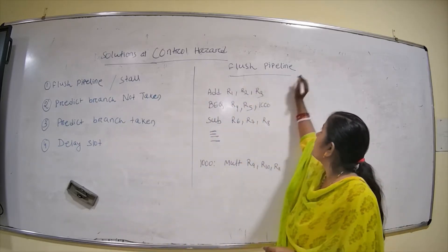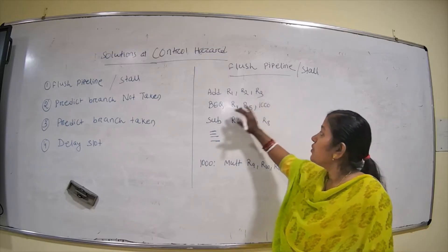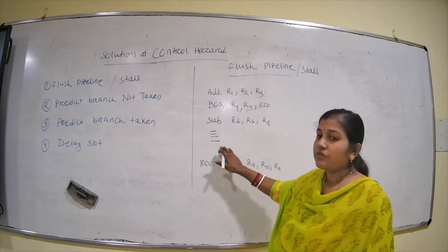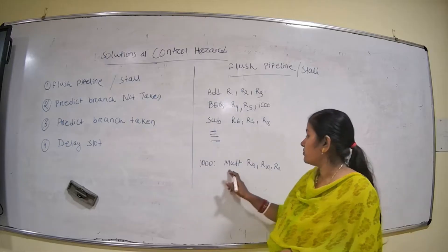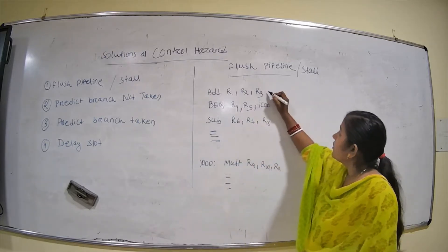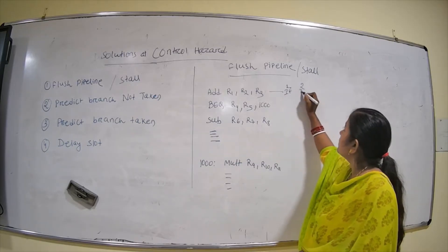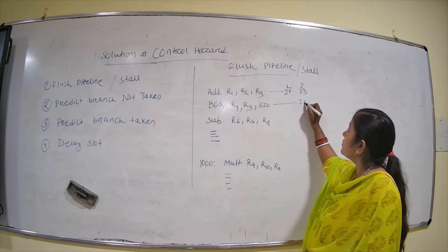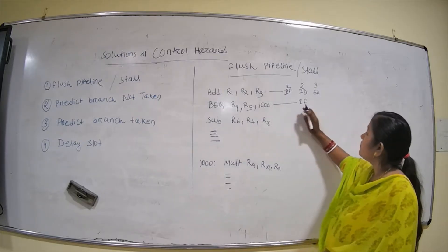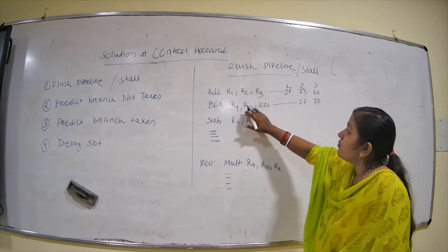For the first solution - stalling - consider these instructions: ADD r1 r2 r3, then BRANCH EQUAL r4 r5 1000, then SUBTRACT r6 r7 r8, with MULTIPLY r9 r10 r11 as the target instruction. In the pipeline diagram: at the first clock cycle, ADD enters IF. At the second clock cycle, ADD moves to ID and the branch instruction enters IF. At the third clock cycle, ADD goes to EX, branch enters ID, and the subtract instruction enters IF.